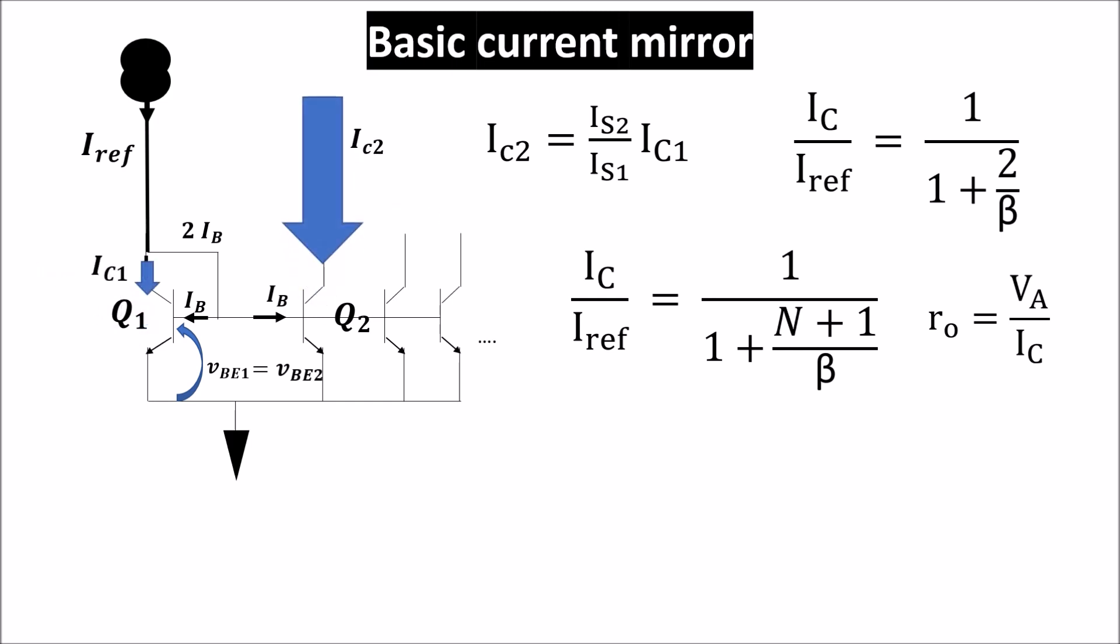But a bigger current in the output could increase Q2 operating temperature with respect to Q1, and a bigger temperature increases the current again, so there is a risk of huge differences between I_C1 and I_C2.